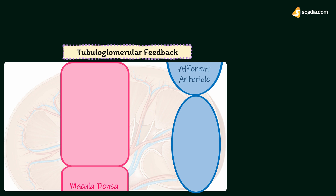Macula densa of the juxtaglomerular apparatus, in the terminal portion of the thick ascending limb, is sensitive to sodium chloride in the tubular fluid. When the glomerular filtrate passes through this region, macula densa acts like a sensor — it detects the concentration of sodium chloride in the tubular fluid and accordingly alters glomerular blood flow and filtration rate. Macula densa detects sodium chloride concentration through the sodium-potassium-chloride co-transporter.